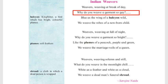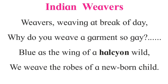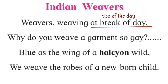Stanza 1: 'Weavers, weaving at break of day, / Why do you weave a garment so gay? / Blue as the wing of a halcyon wild, / We weave the robes of a newborn child.' The first line tells us about the time when weavers start their work. The phrase 'break of day' means the rise of the day or early morning. 'Gay' is an adjective meaning happy, so the poet asks why they look so happy while weaving.